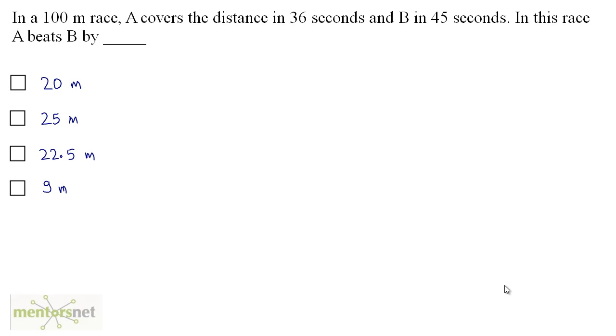In a 100 meters race, A covers the distance in 36 seconds and B in 45 seconds. In this race, A beats B by how many meters?